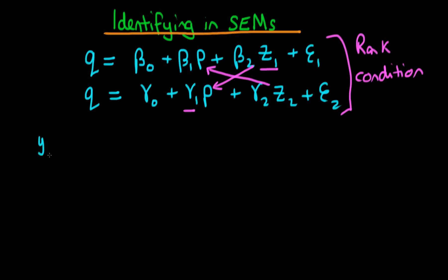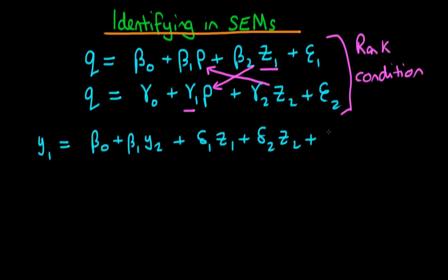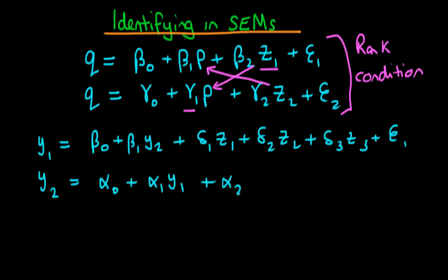Let's say I have a simultaneous equation setup where: y1 equals beta 0 plus beta 1 times y2 plus exogenous variables z1, z2, and z3, plus error epsilon 1. And the second equation is y2 equals alpha 0 plus alpha 1 times y1 plus alpha 2 times y3 — a further endogenous variable — plus gamma 1 times z1 plus gamma 2 times z4, plus error epsilon 2.